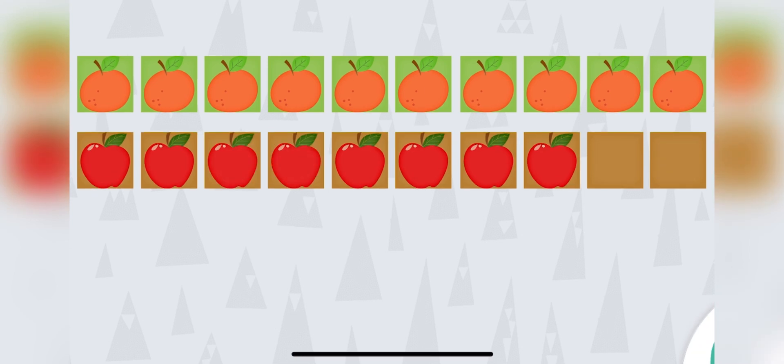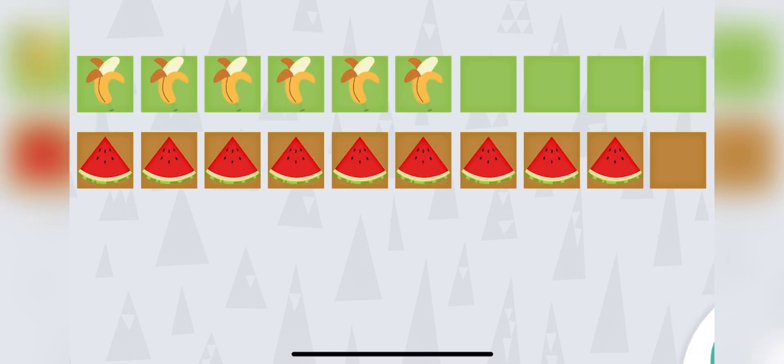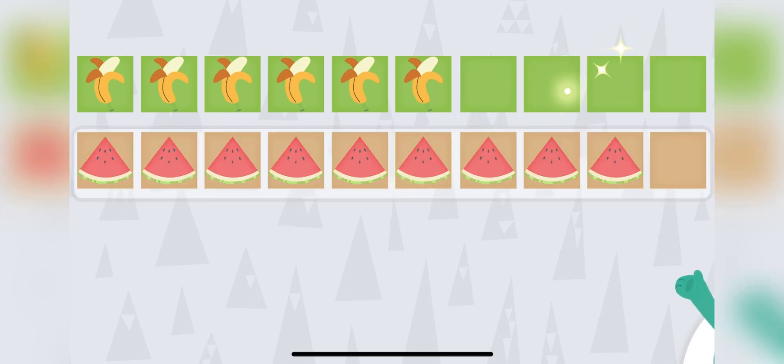Which row has more fruits? Awesome! You tapped the row with more. Which row has more fruits? Super! You tapped the row with more.